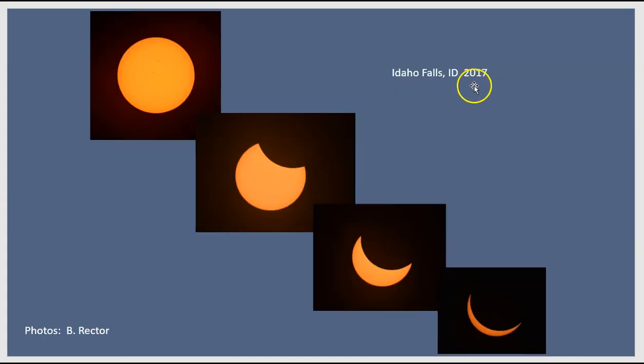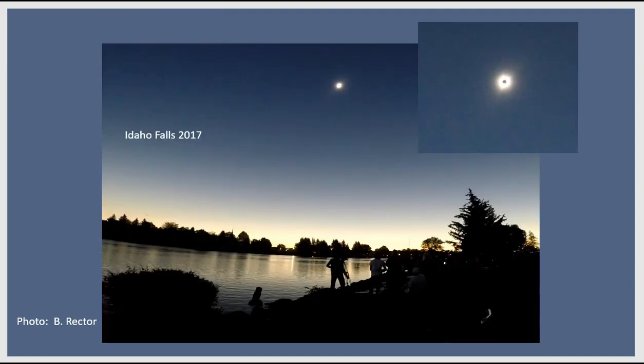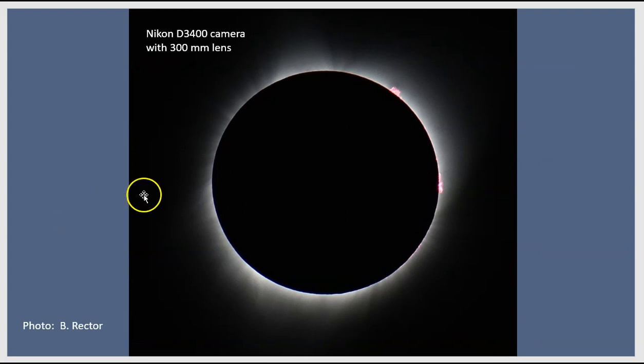In Idaho Falls, in 2017, this is what the sun looked like. And then, as the moon moved across the sun, we get the eclipse. The moment of totality looked like this, from a GoPro camera, just kind of cropped in. And from a camera with a longer lens, this is the moment of totality. We see some of the sun's corona here, and some prominences, solar prominences.